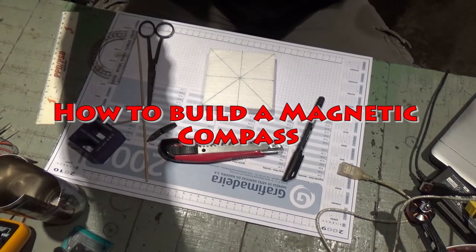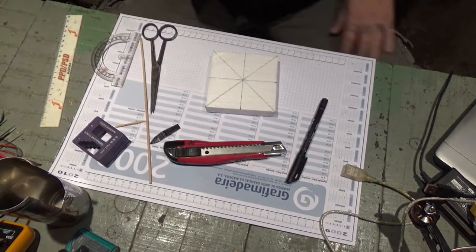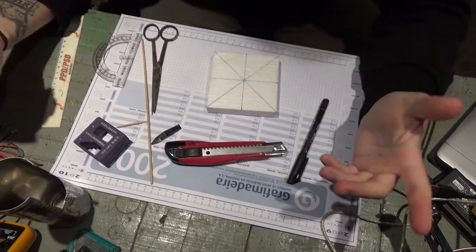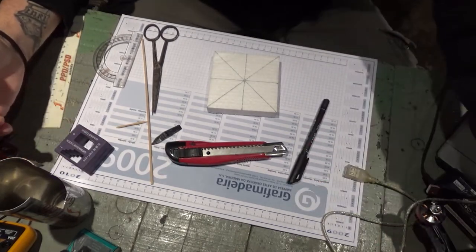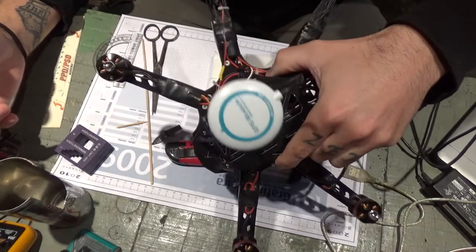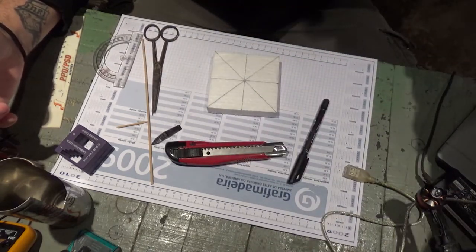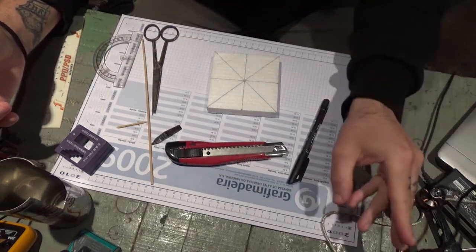Okay guys, in this video I'm gonna be showing you how to build a magnetic compass. As I was building my mini-hexa, I had to have a compass to figure out which side is the magnetic north.